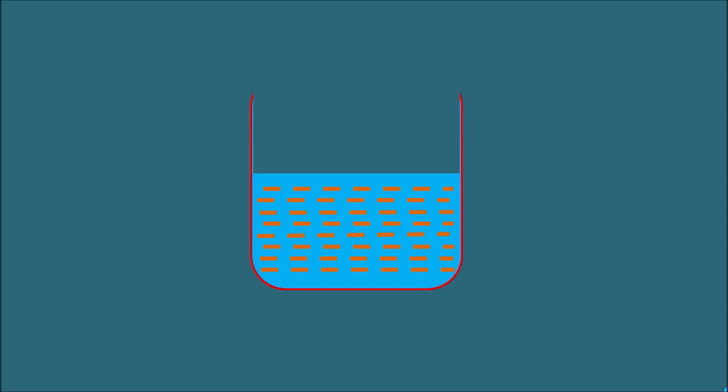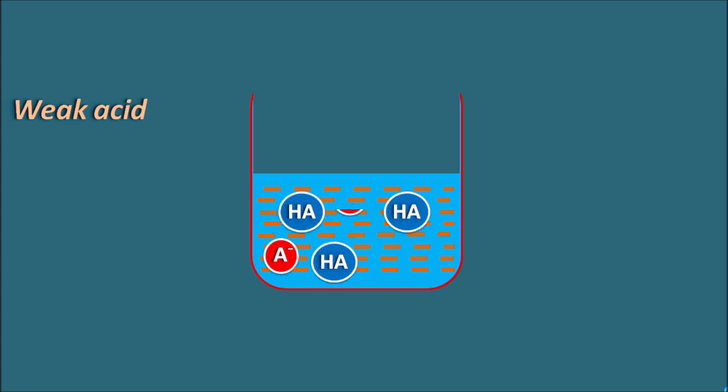Suppose we have a beaker with a solvent like water and we have HA, which is a weak acid. When we dissolve this weak acid in water, the weak acid may be present as both unionized and ionized forms. As we know, the ionized form is more water soluble than the unionized form. So if A⁻ is greater than HA, then the weak acid is more solubilized in water.